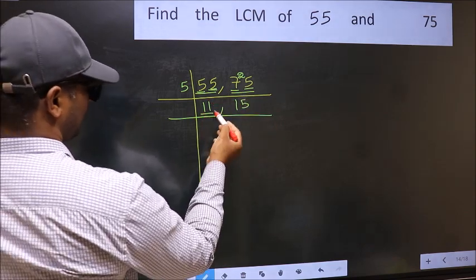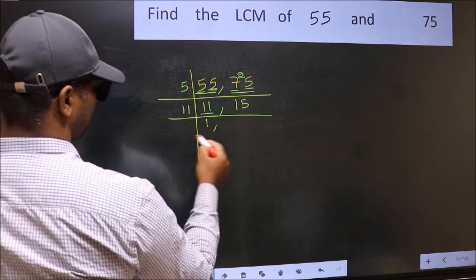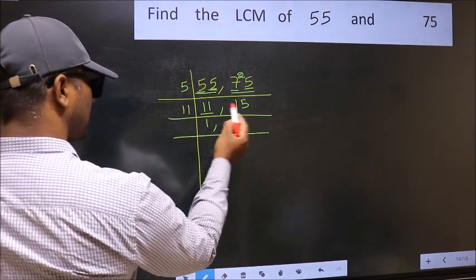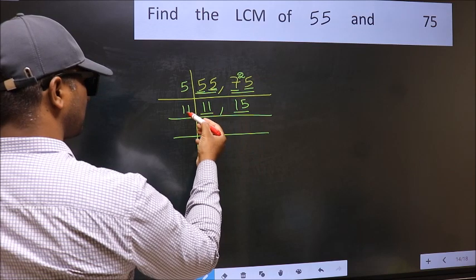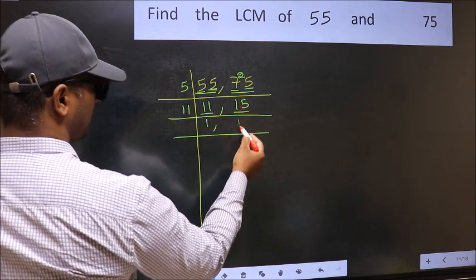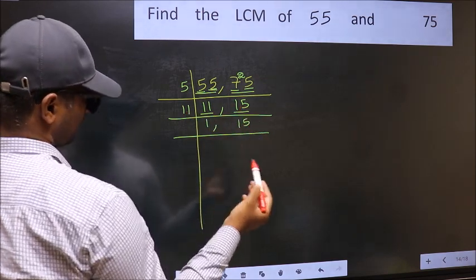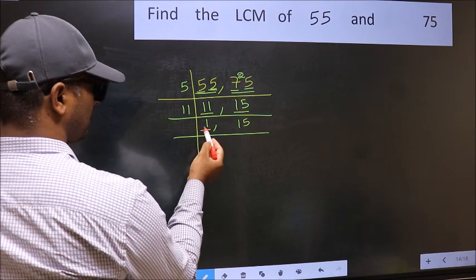Now here we have 11, 11 is a prime number, so 11 ones 11. The other number 15, not divisible by 11, so you write it down as it is. Now we got 1 here.